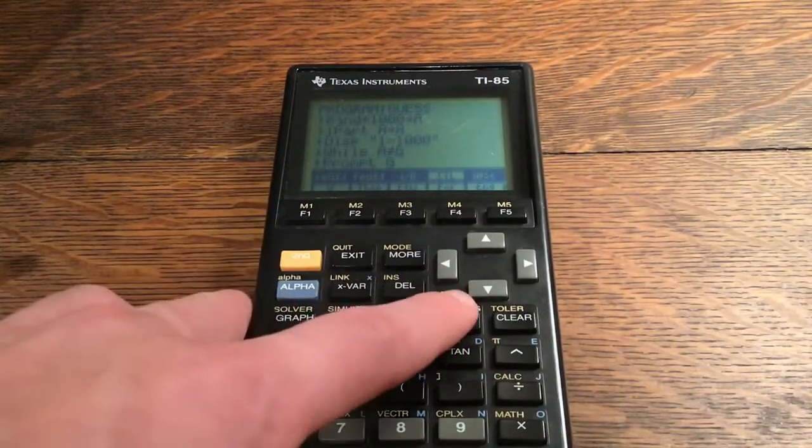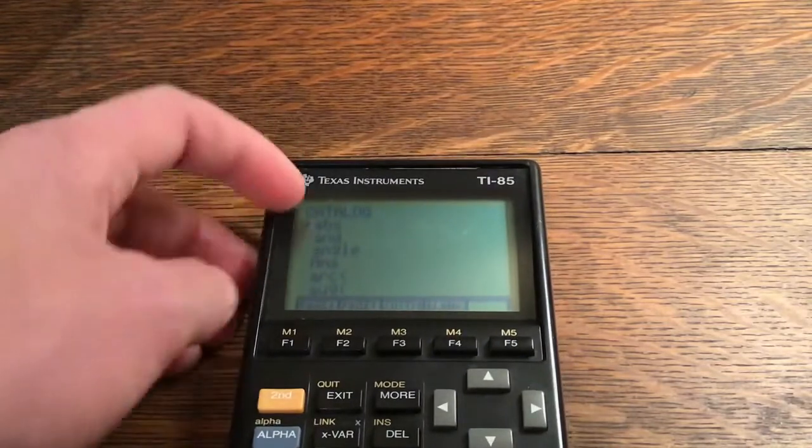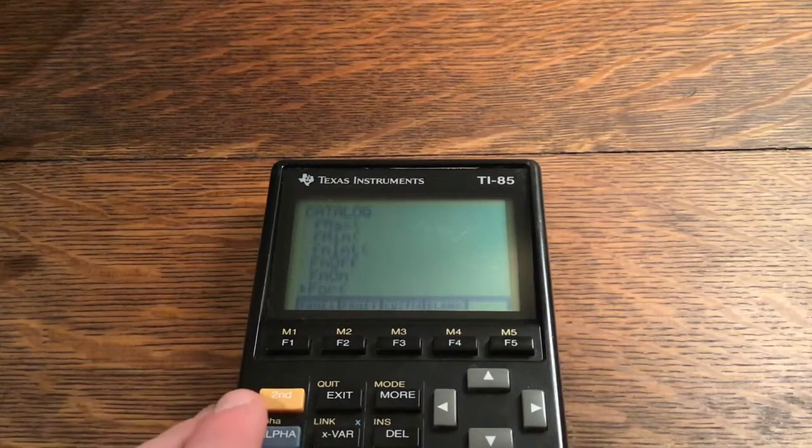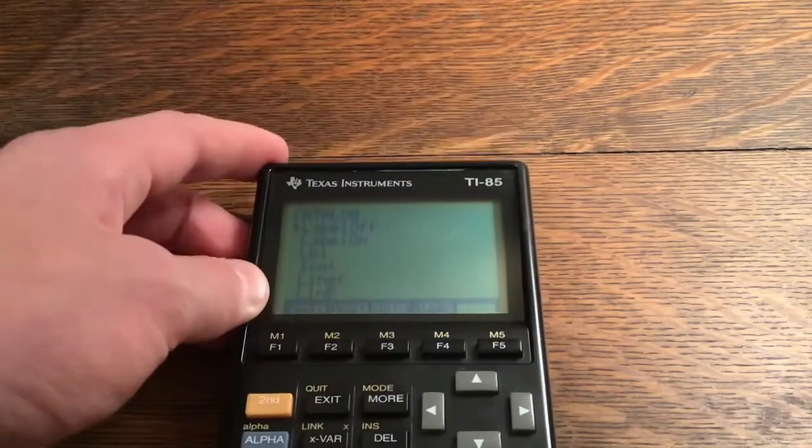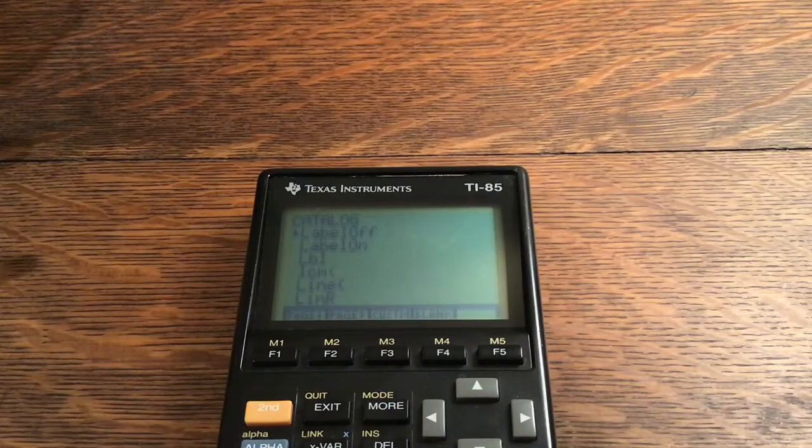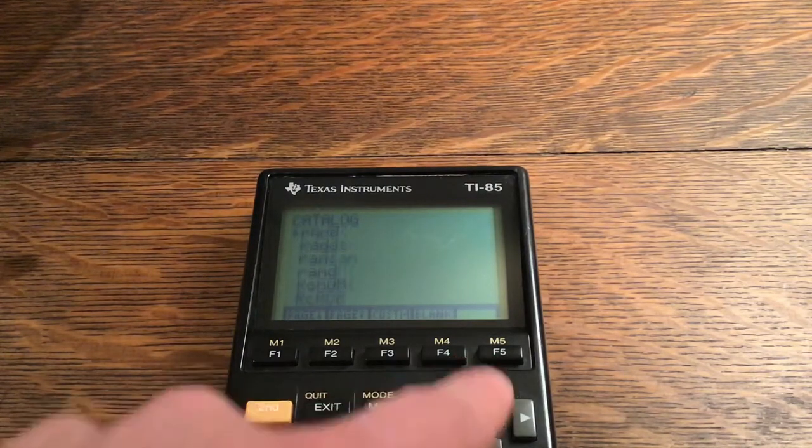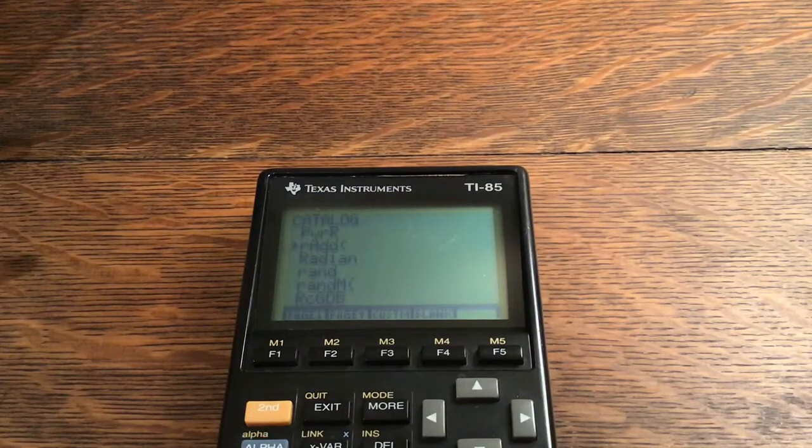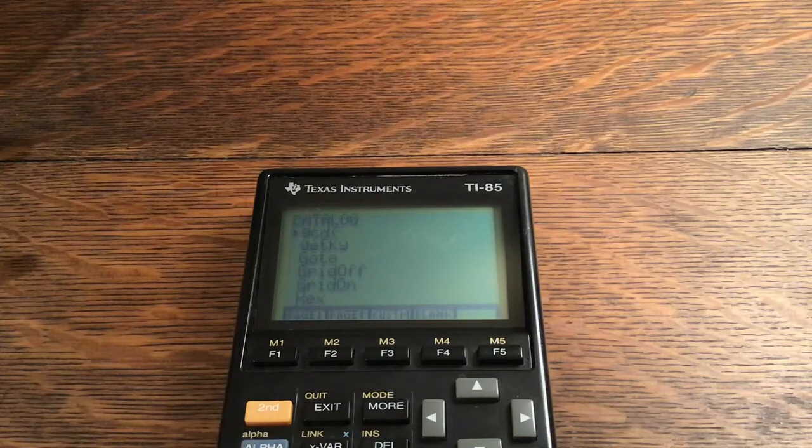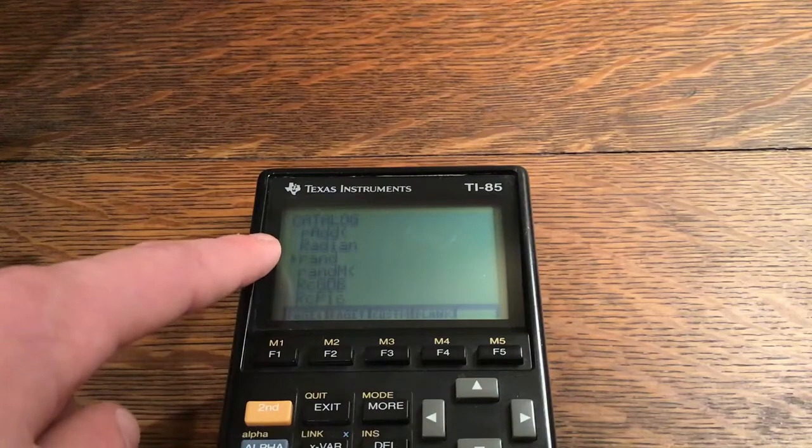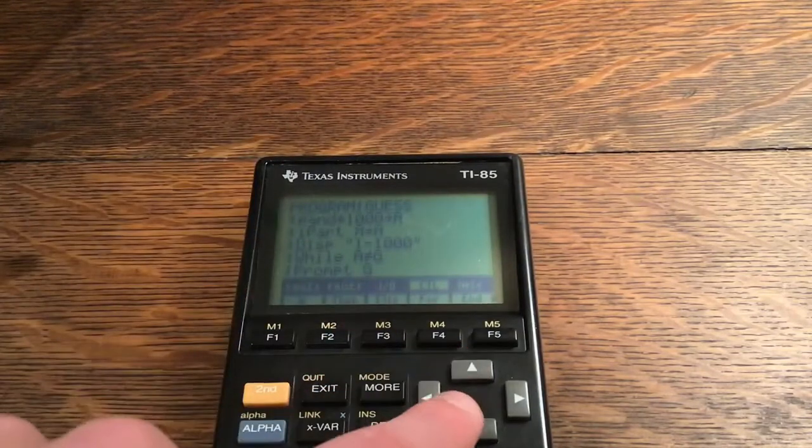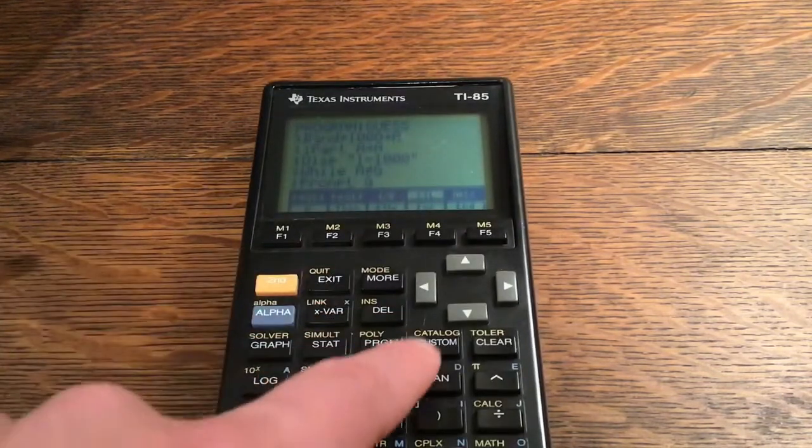And then if you cannot find anything, you click second and custom, so second custom, which would take you to the catalog, and it gives you a list of all the commands in the calculator in alphabetical order. So if I was to click alpha L because I wanted to go to the L's, as you can see it takes me to the L's. So if you accidentally clicked L and you want to go to something else, click alpha and then whatever you wanted to go to. For example, I have the rand command, so alpha and R, and rand is right here. And so then what you do is you would click enter and it will put it on the screen, as you can see it put it right there for me because that's where I was.